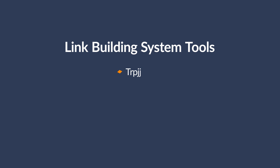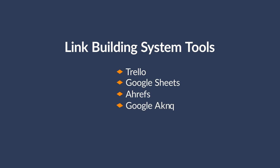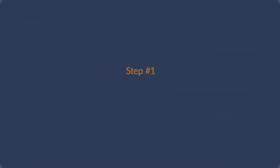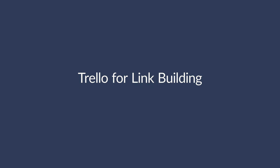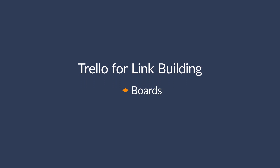Here's an overview of the link building tools I'll be using: Trello, Google Sheets, Ahrefs, Google Apps, Mailshake, and I'll touch on Zapier for automation. The first step is to set up your Trello boards. There are three different parts to Trello: boards, lists, and cards. In terms of link building, I like to simplify things and use one board per website or client.